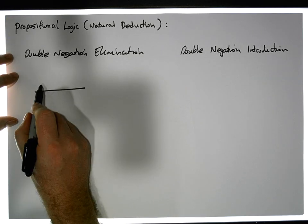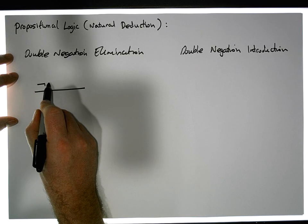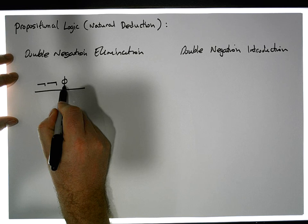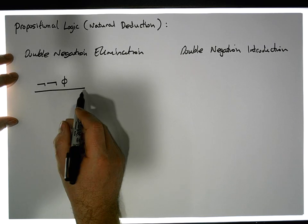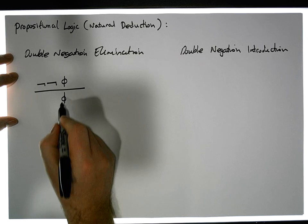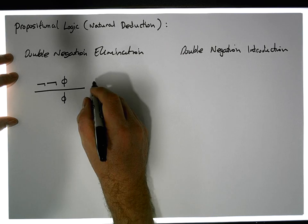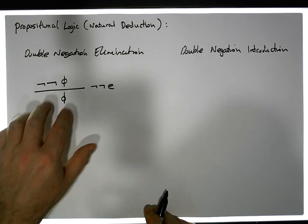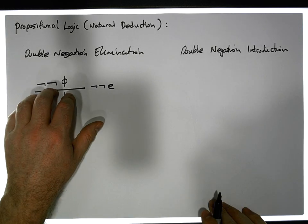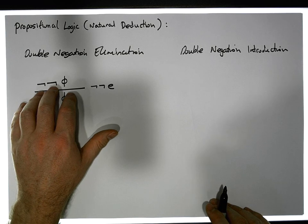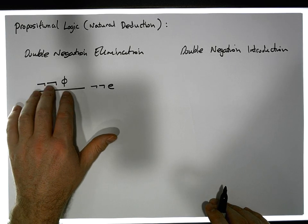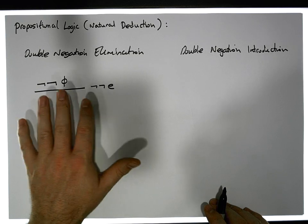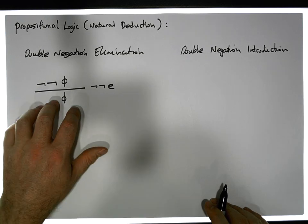From a rule perspective, if we know that the negation of the negation of phi is true, well then we can conclude that phi must be true. This is known as double negation elimination — we're eliminating the double negation, which makes sense.